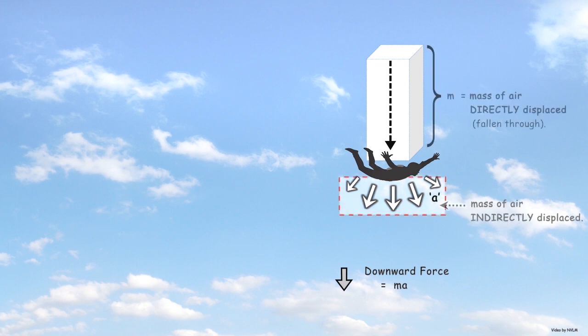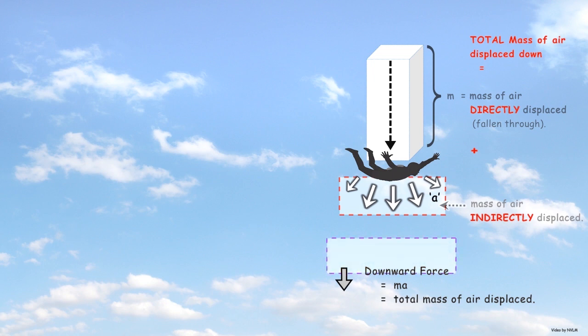Accelerating air downwards will indirectly displace more air around the skydiver. So the total mass of air displaced will equal the air directly and indirectly displaced. In summary, the downward force equals the skydiver's mass at terminal velocity and the total mass of air displaced.